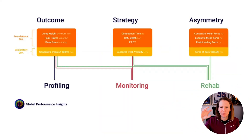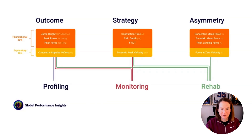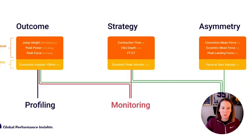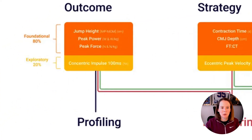Let me give you a sneak peek of my final framework. This is my current framework, and like anything in science where our knowledge evolves, I maintain the desire and ability to adapt it over time. You'll see straight away that it's broken into three buckets: outcome, strategy, and asymmetry. We also have foundational metrics alongside more exploratory metrics, based on an 80-20 rule.